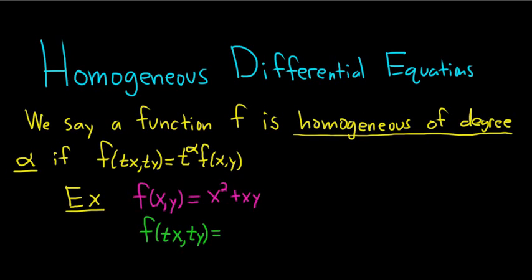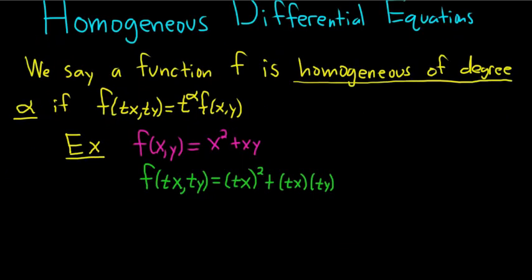So we end up with, instead of x squared, it's the quantity tx squared plus, and instead of x, it's tx, and instead of y, it's ty. Let's keep going and see what happens. So it looks like we can use properties of exponents here. We get t squared x squared, and in the second term, we can combine the t's. Multiplication is commutative. So this is going to be t squared plus t squared xy.